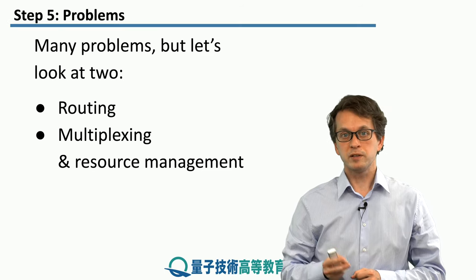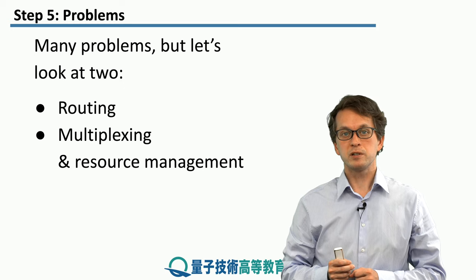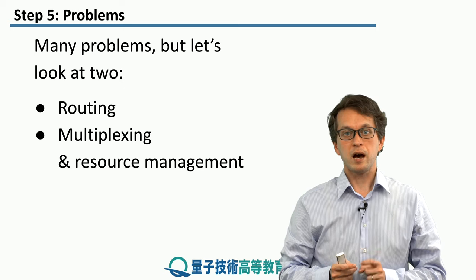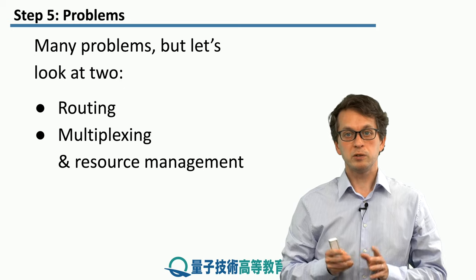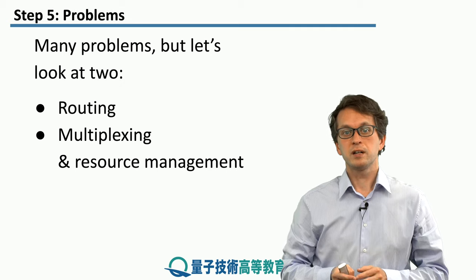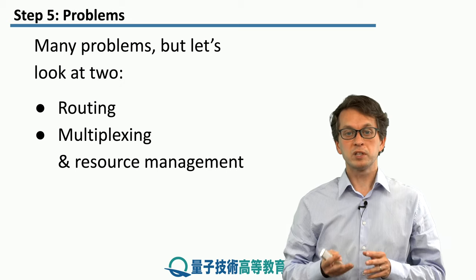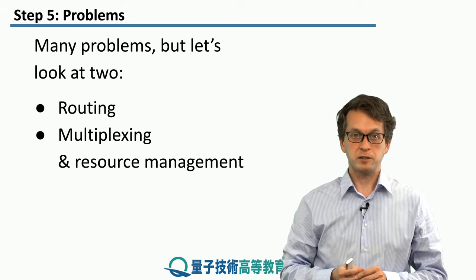There are a few problems, but the two main problems we will consider in this step are routing — how do you direct traffic through a network — and also multiplexing and resource management.